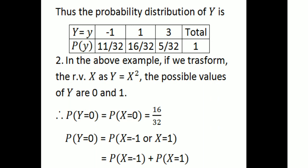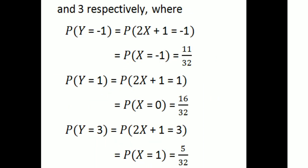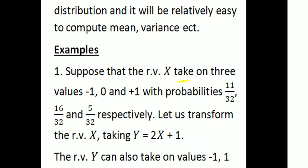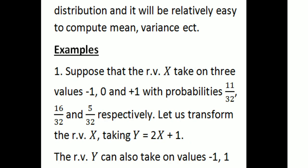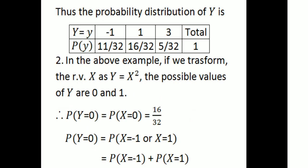Next example: in the above example, if we transform the random variable with Y = X². The possible values of X² are determined from X ∈ {−1, 0, 1}. The probability of Y = 0 equals P(X = 0) = 16/32.